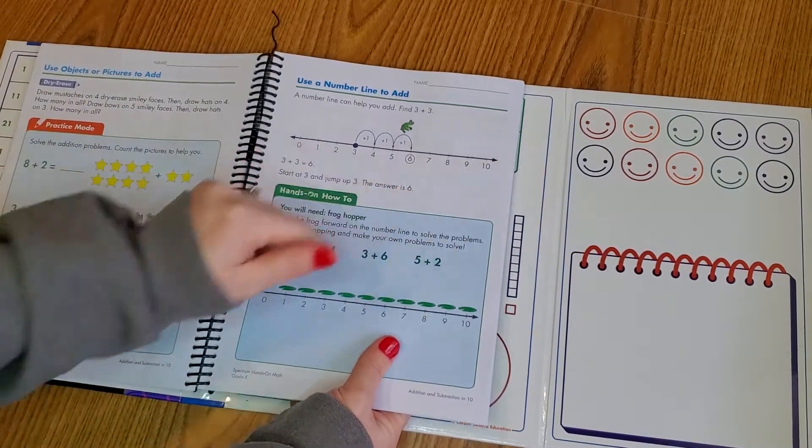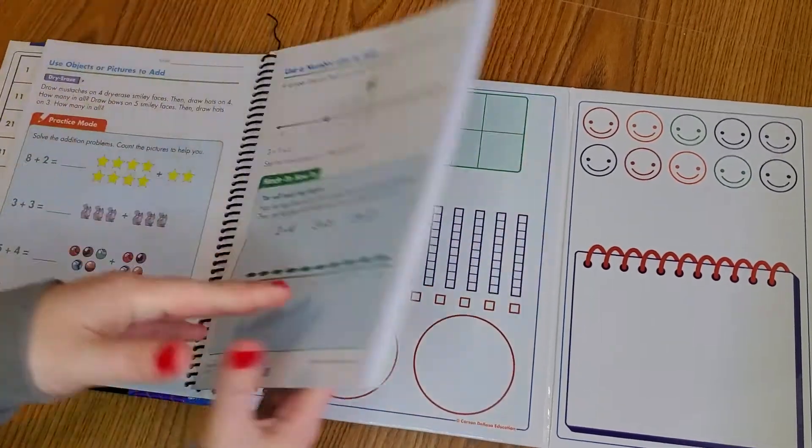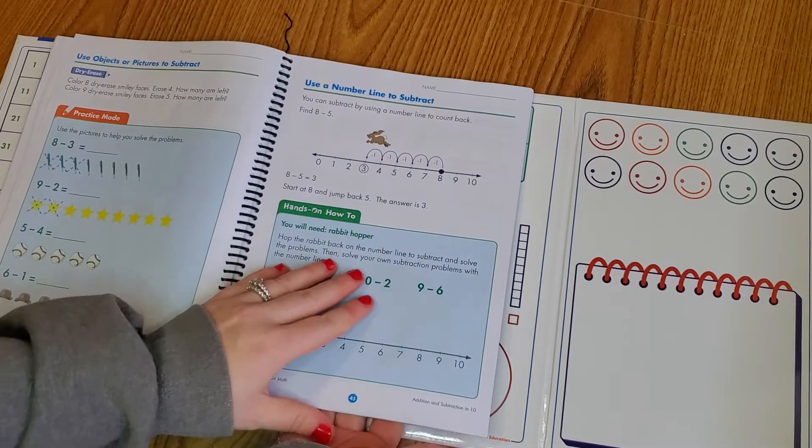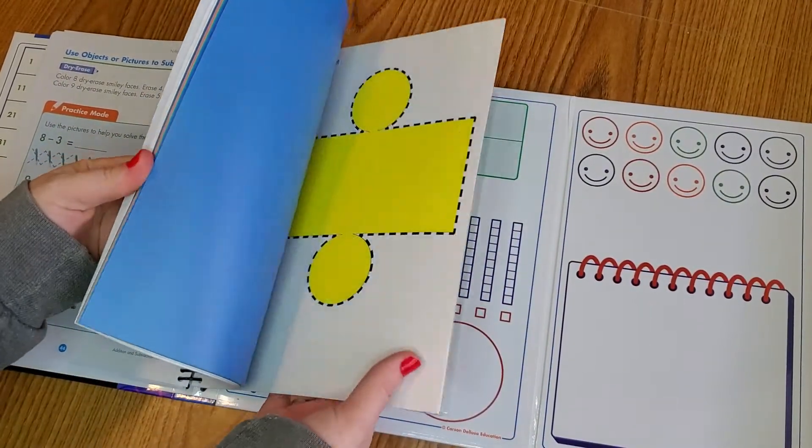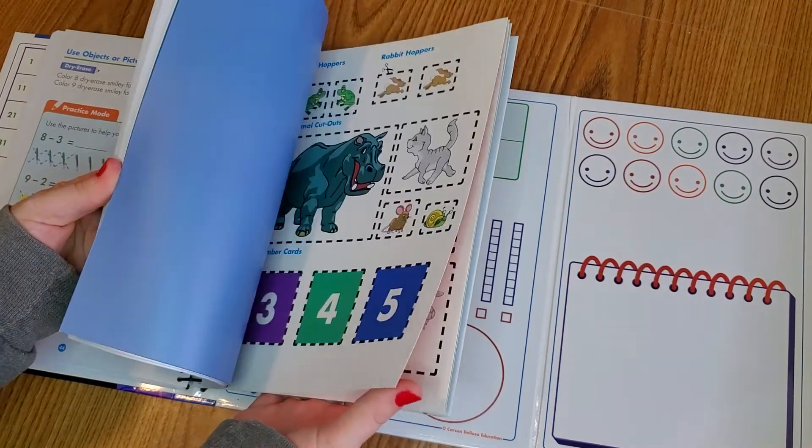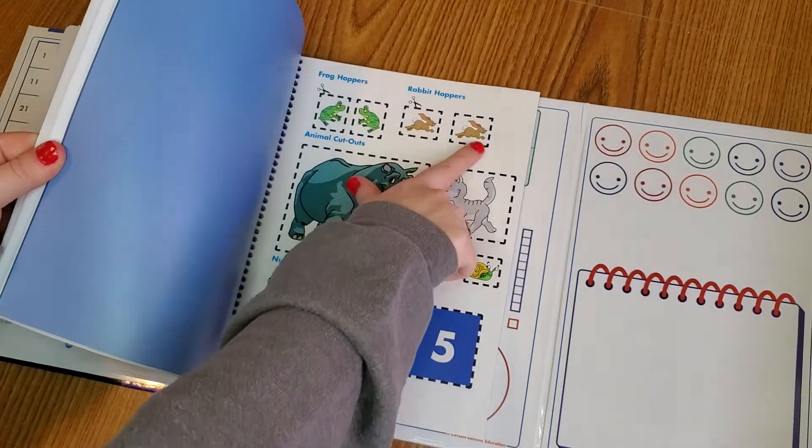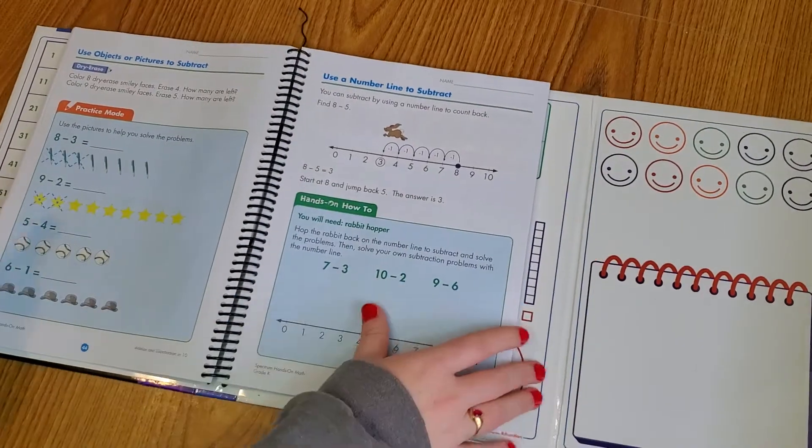Then there's a number line, which is back here. Let's see if I can find the hopper. There's a bunny hopper, and there's the manipulative back here for it. Each lesson has different things. So it's very, very hands-on.